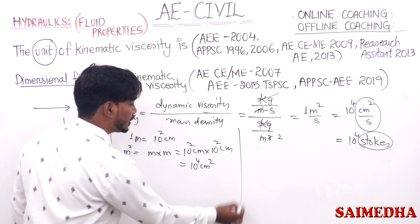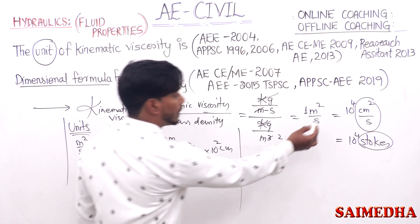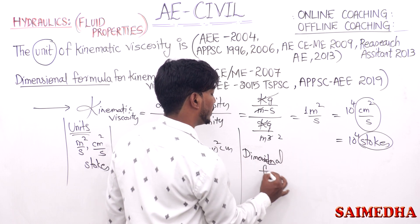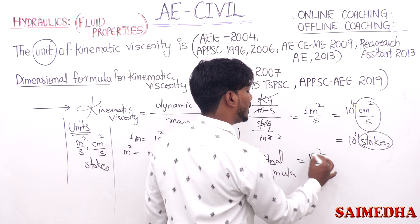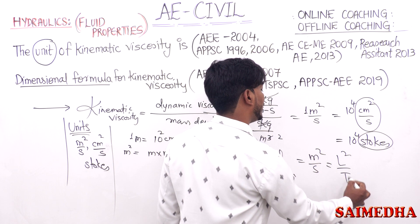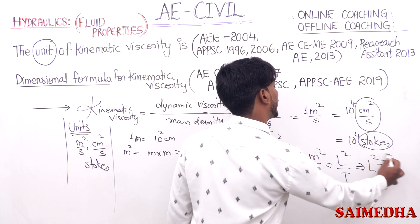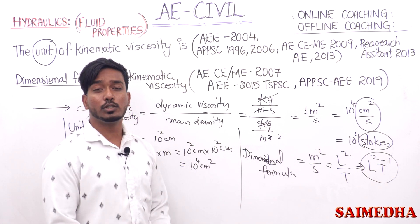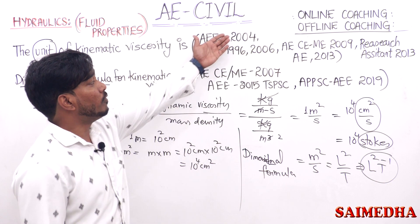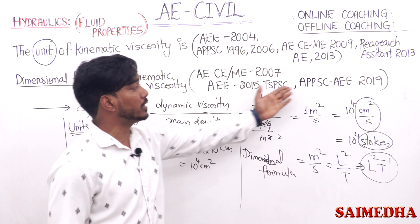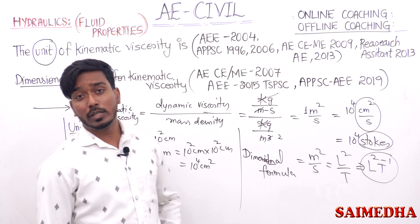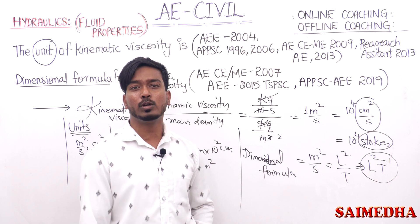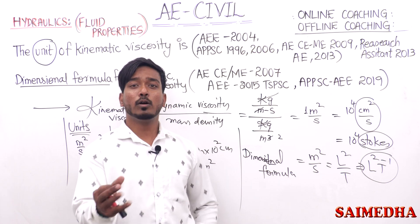Next, the dimensional formula for kinematic viscosity. Since the unit is meter square per second, meter is length L, so it is L² divided by T — written as L²T⁻¹. If you know this one concept of kinematic viscosity, you could have gotten marks in around nine to ten times this question has appeared. That is how important this concept is.